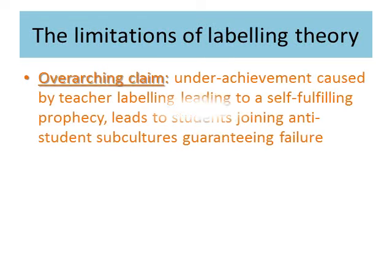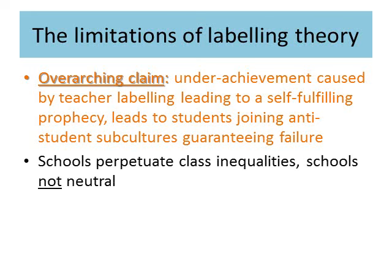There are, however, some problems with labelling theory. The overarching claim is that underachievement is caused by teacher labelling, leading to a self-fulfilling prophecy, which leads to students joining anti-school subcultures and thus guaranteeing failure. There is also the argument that schools perpetuate class inequalities and that schools are not neutral.